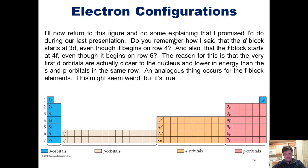I'll now return to this figure and do some explaining that I promised I'd do during our last presentation. Do you guys remember how I said that the d block over here starts at 3d, even though it begins on row 4? Also, I told you guys that the f block starts at 4f, even though it begins on row 6. Now the reason for this is because the very first d orbitals here are actually closer to the nucleus and lower in energy than the s and p orbitals that are found in the same row. That's the reason why the first row of d orbitals are actually at an energy 3 level, one level more stable than the s and p orbitals in the same row. An analogous thing occurs for the f block elements here. This might seem super weird, but it's totally true.